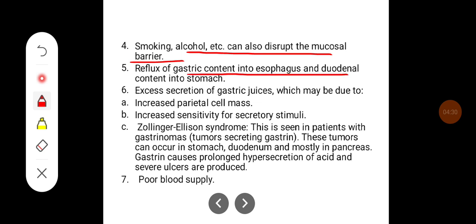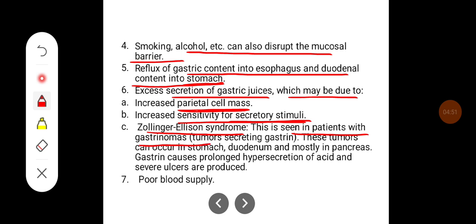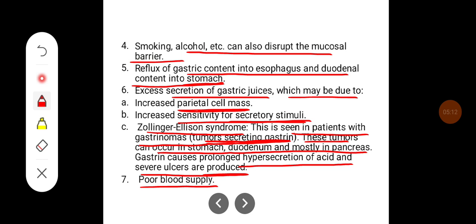Smoking and alcohol can disrupt the mucosal barrier. Reflux of gastric contents into the esophagus and duodenal content into the stomach can lead to ulceration. Excess secretion of gastric juices, which may be due to increased parietal cell mass and increased sensitivity to sensory stimuli, is another cause. Zollinger-Ellison syndrome is seen in patients with gastrinomas — tumours secreting gastrin — which can occur in the stomach, duodenum, and mostly in the pancreas. Gastrin causes prolonged hypersecretion of acid, producing severe ulcers. Sometimes poor blood supply can also cause ulceration.